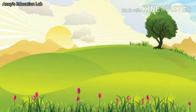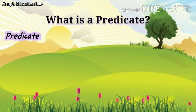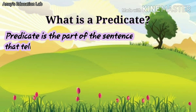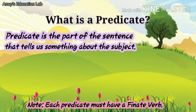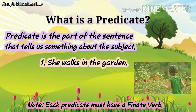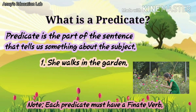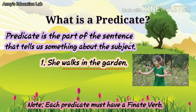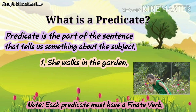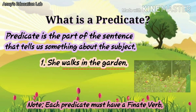Now, let us try to understand predicate. Students, what is a predicate? A predicate is the part of the sentence that tells us something about the subject. That means it describes the subject. Note, each predicate must have a finite verb. Let us see few examples. She walks in the garden. Here, walks in the garden is the predicate because this part of the sentence tells us more about the subject, she. And walks is the finite verb in this predicate.